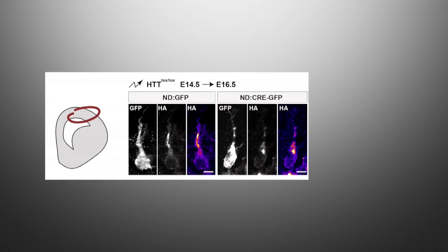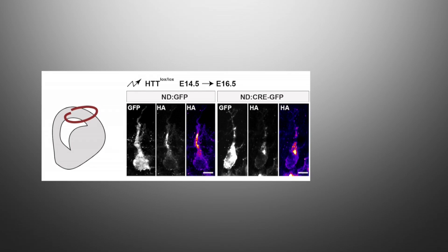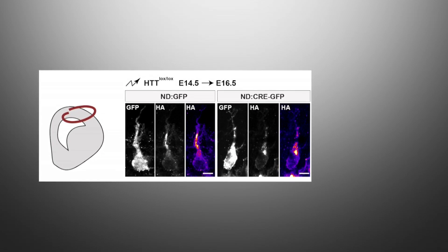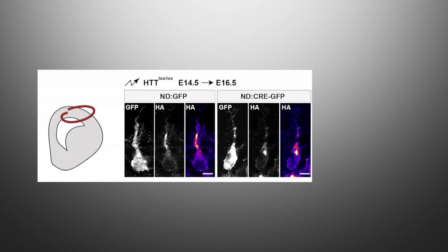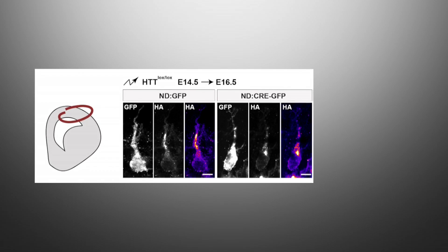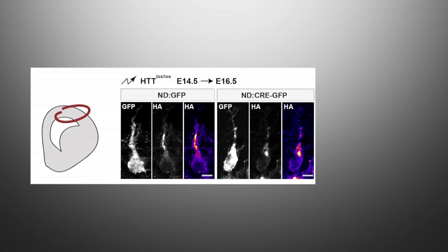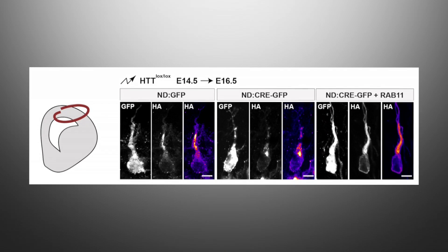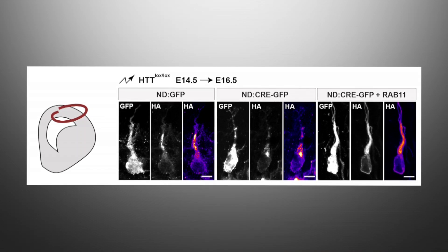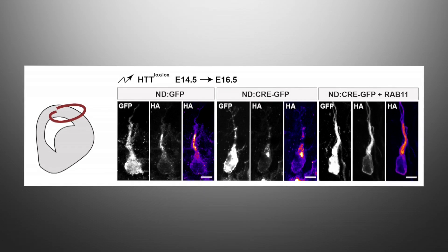In control neurons, N-cadherin is present in the leading process of migrating cells, whereas in mutant neurons it accumulated in the perinuclear region. The localization of N-cadherin in leading processes was rescued by re-expressing Rab-11.